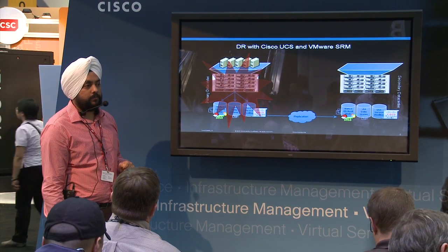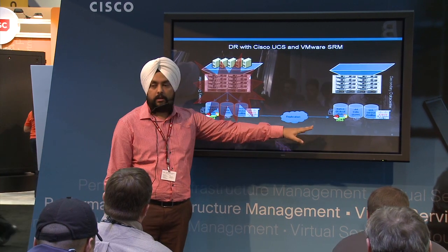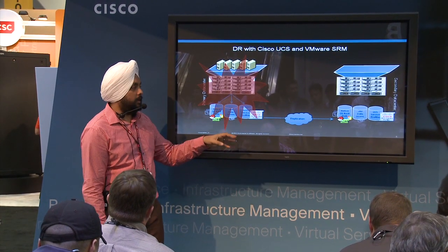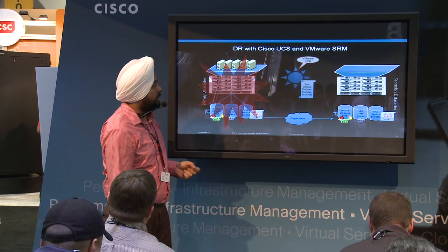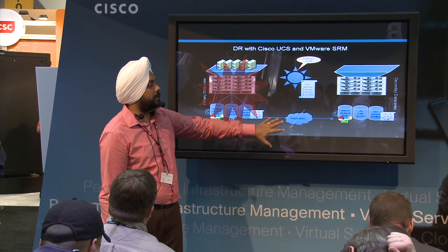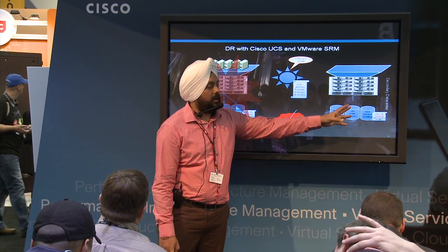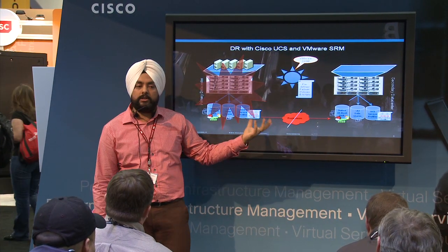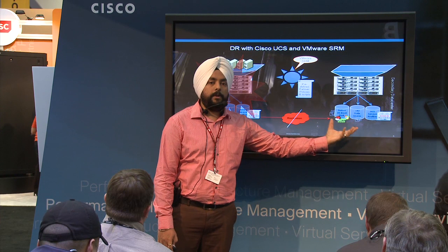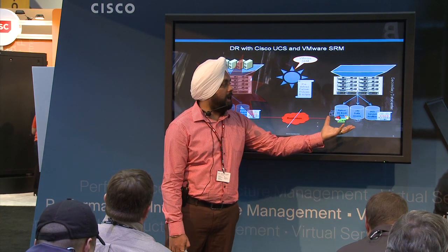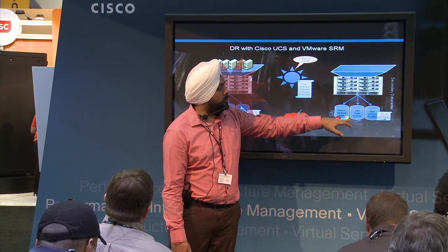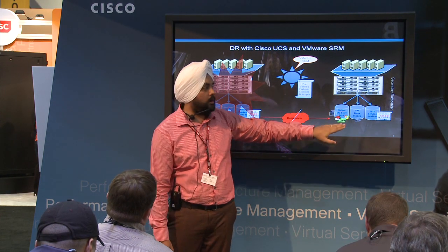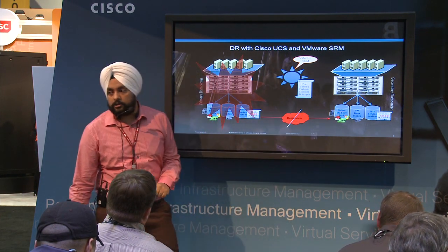Now the disaster strikes. You already have everything up and running with the help of SRM. SRM kicks in and breaks the replication. The moment it breaks the replication, your blades can now see the volumes, because SRM can talk to your storage array and make the volumes appear to the blades. When that happens, your virtual machines are brought online because your ESX was brought online from the SAN storage.